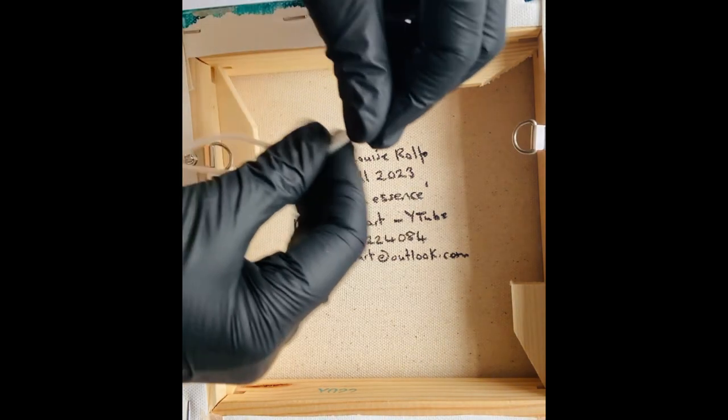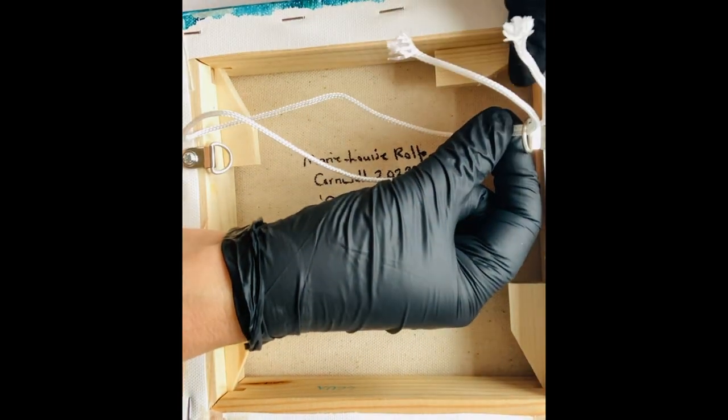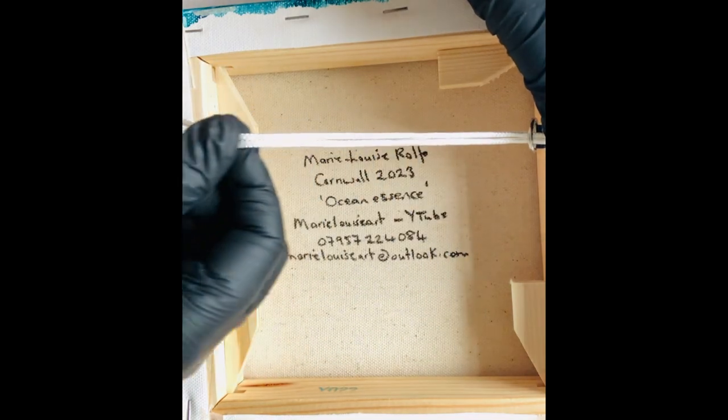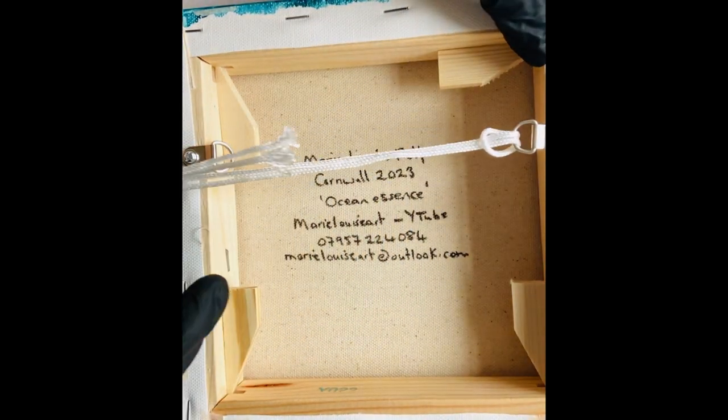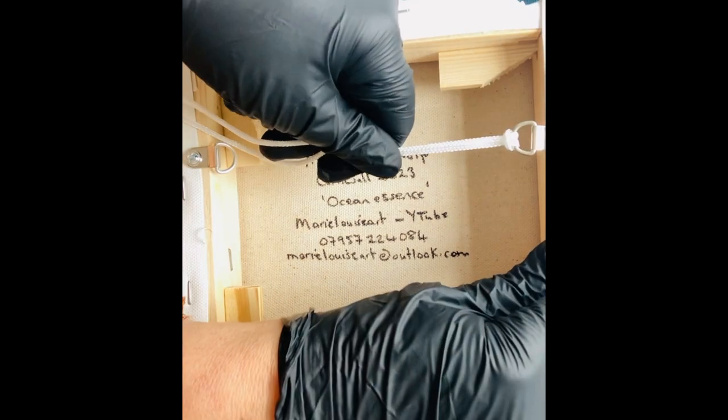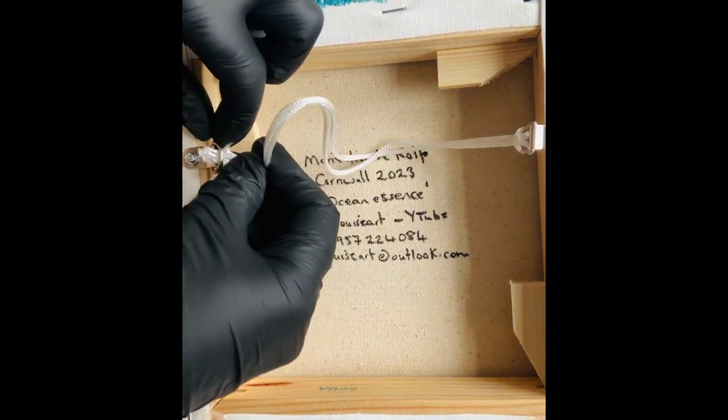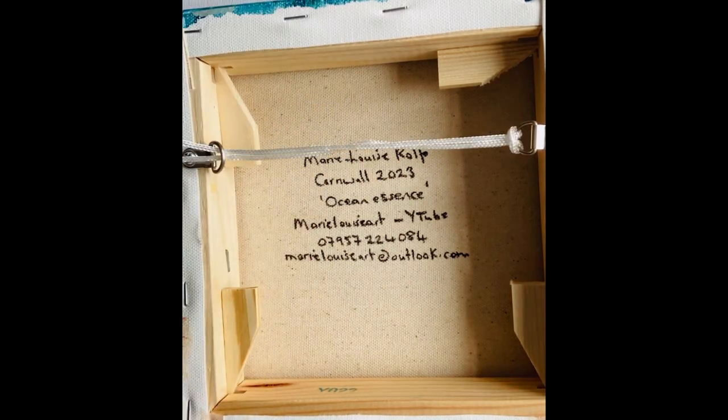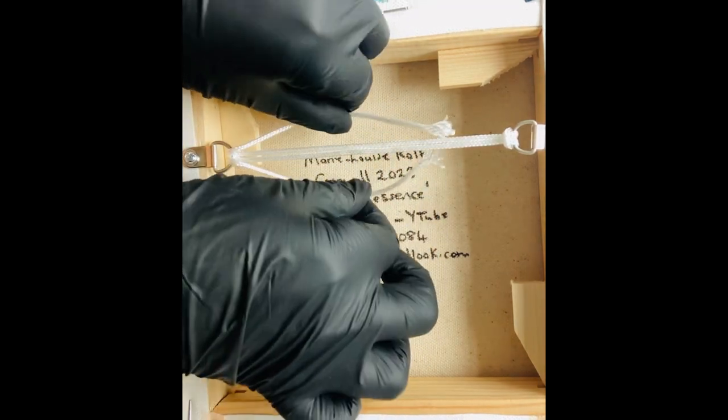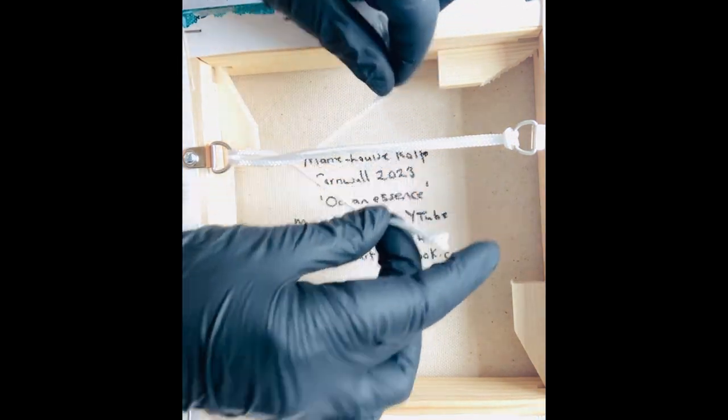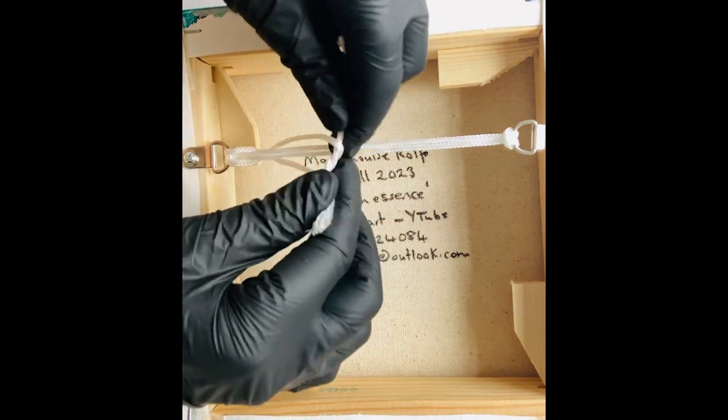Make sure that both sides of the string are an equal length and feed it through. Then I loop it in and it attaches there on the D-ring. Make sure it's nice and secure. Don't pull too hard, but just enough to feel that tension. Feel the tension there - it naturally has that bit of give. You're going underneath.